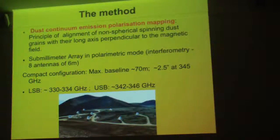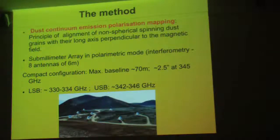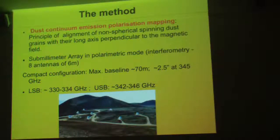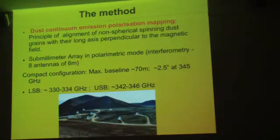So if you want a map of the magnetic field, what you do is rotate the polarization vector by 90 degrees. This time we use the 2mm array — the last time we did that observation we used a single dish — so this time we will have better resolution. The angular resolution is 2.5 arcseconds at 345 GHz. The compact configuration allows a maximum baseline around 20 meters, and the lower sideband and USB band cover a range from 313 to 346 GHz.